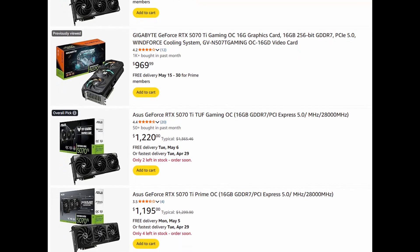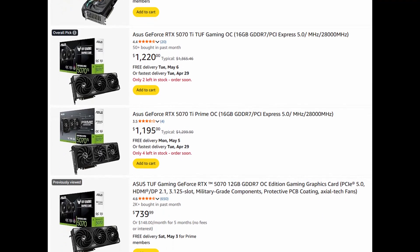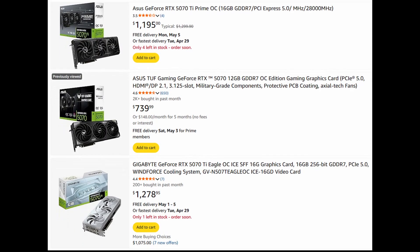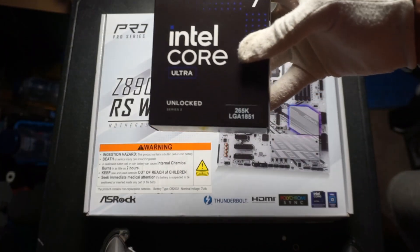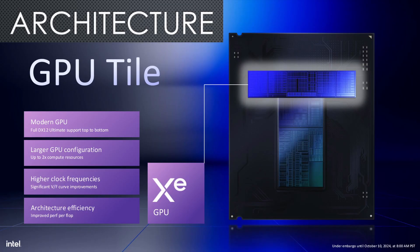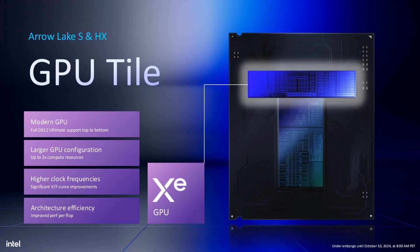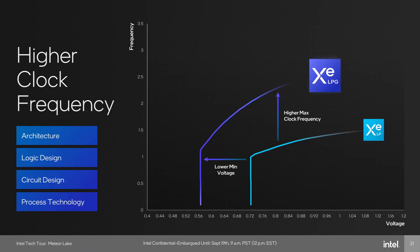With the GPU market currently being in a state where it is difficult to get cards at MSRP, I have been getting a lot of use out of my integrated graphics. In this video, I take a look at the integrated graphics solution of Arrow Lake. The Intel Arc graphics tile found inside Arrow Lake is built on TSMC's N5 node and offers a massive improvement over the XC LP-based iGPU in the last generation Raptor Lake CPUs. The integrated graphics in Arrow Lake has full support for DirectX 12 Ultimate, which means you can even enable real-time ray tracing. The Arrow Lake integrated graphics is based on the XC LPG graphics architecture, which was first introduced with Intel's Meteor Lake.